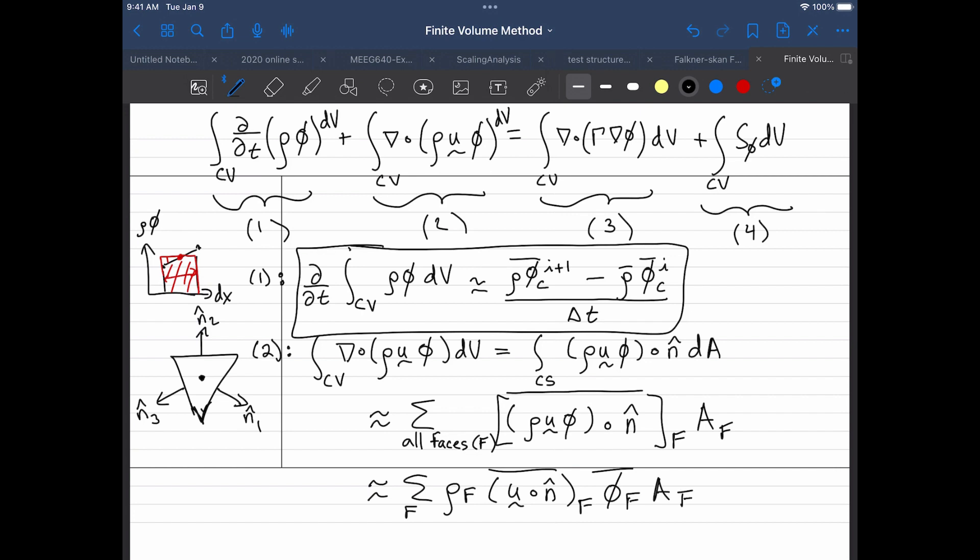And then for each of these individual quantities, what we'll need to do is actually do some sort of interpolation to figure out what the value at the face is. So typically the way you do that is, let's say I have a tetrahedron element here. So I've got a centroid here and I've got another centroid here. So let's call that C and A.